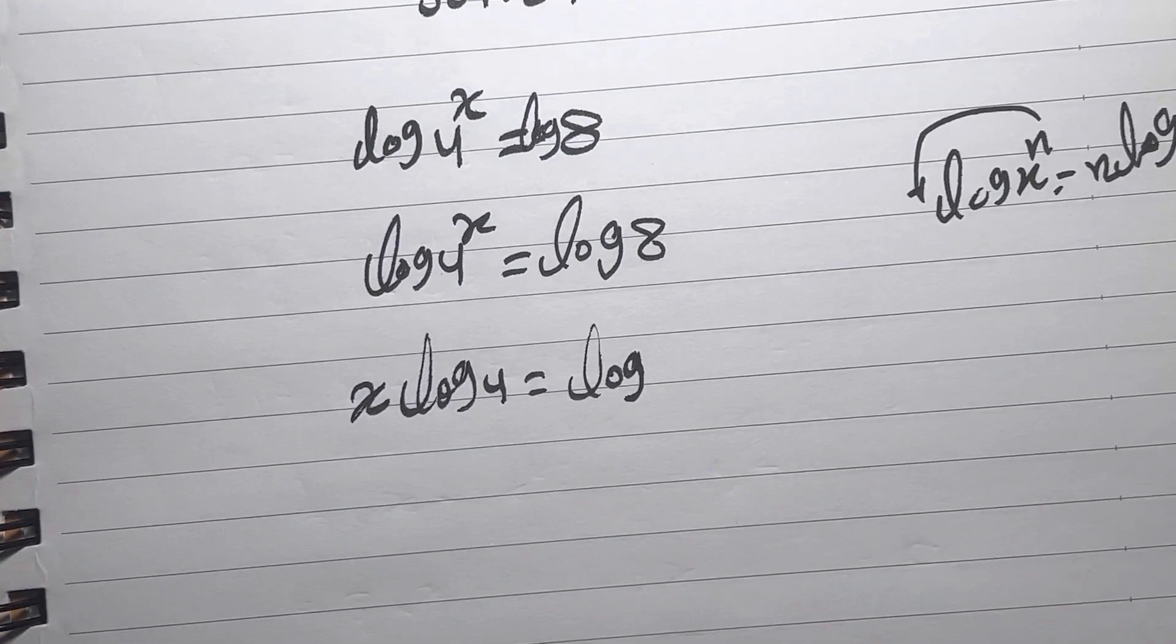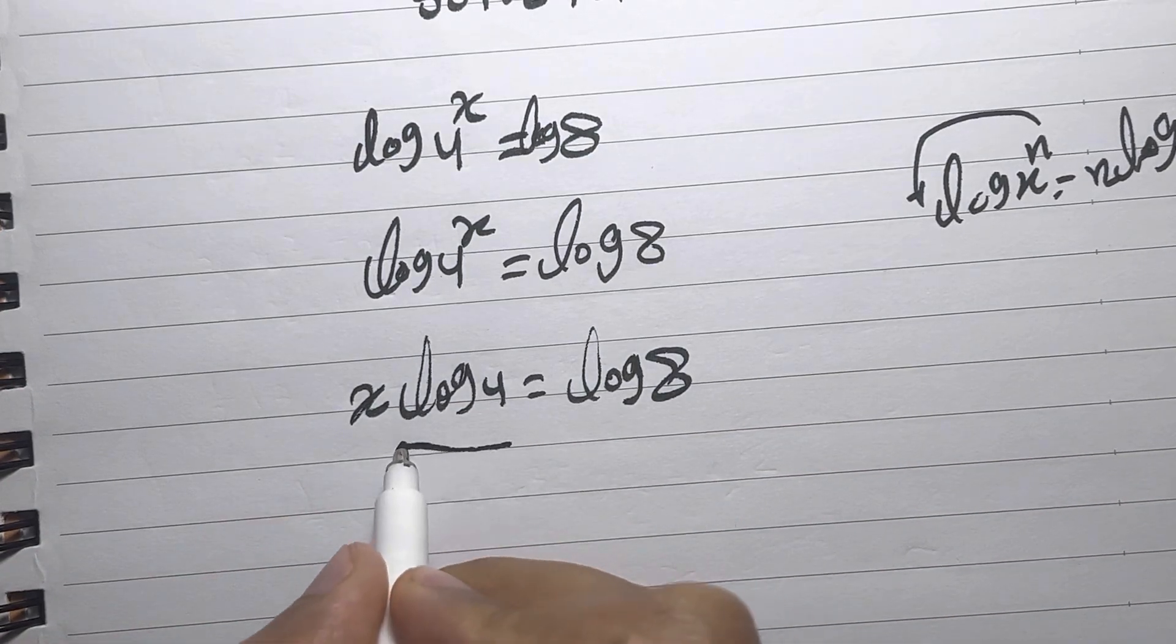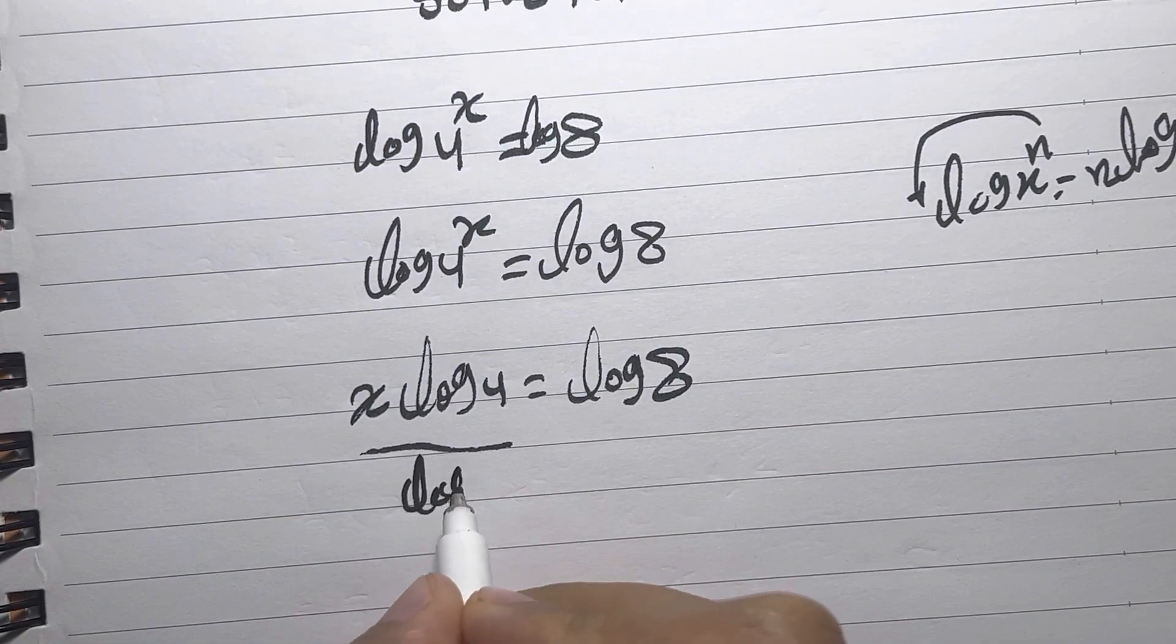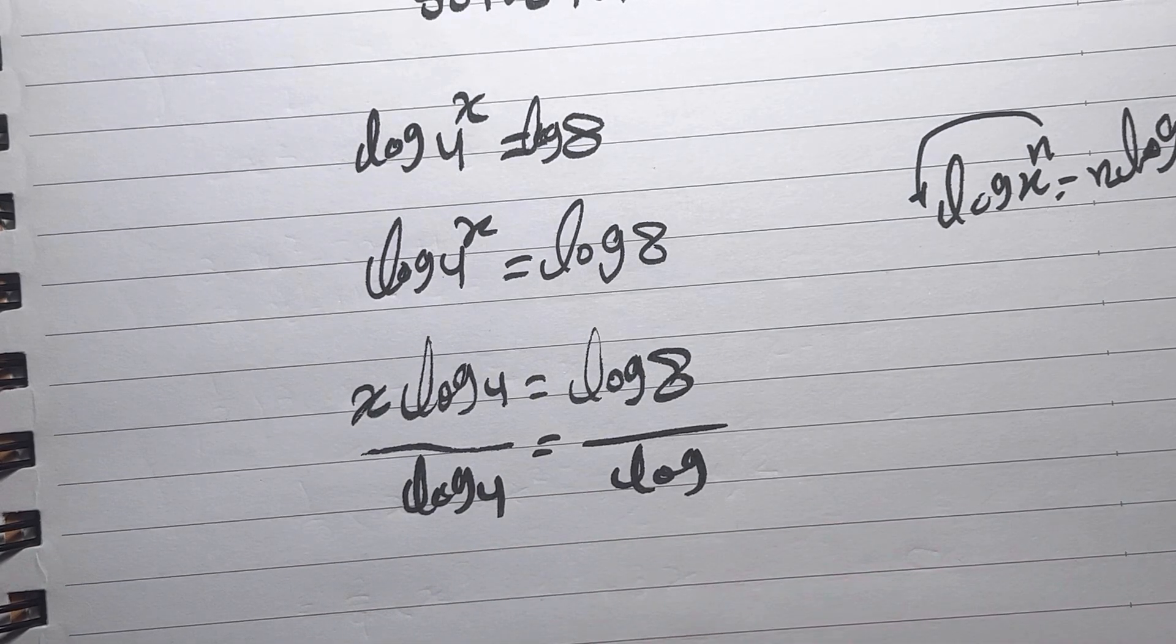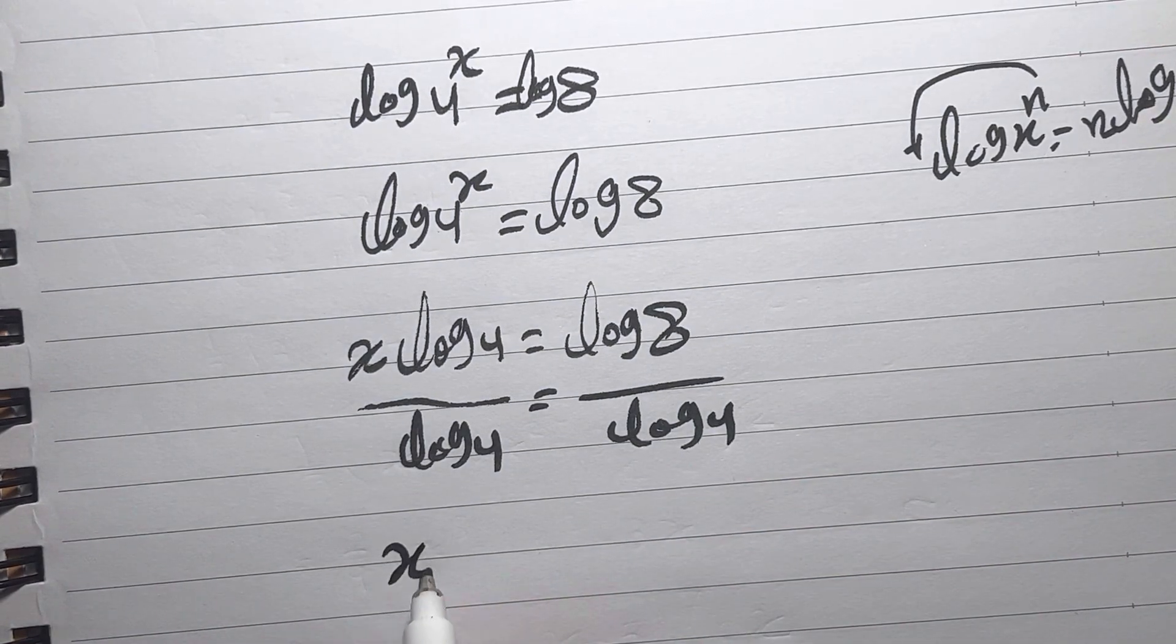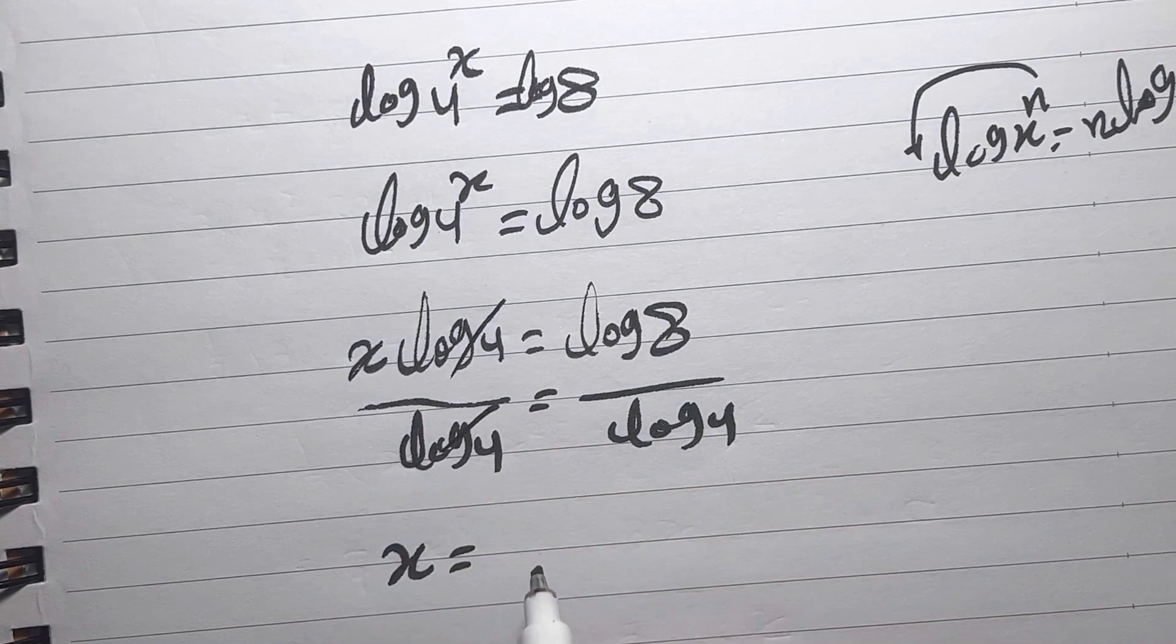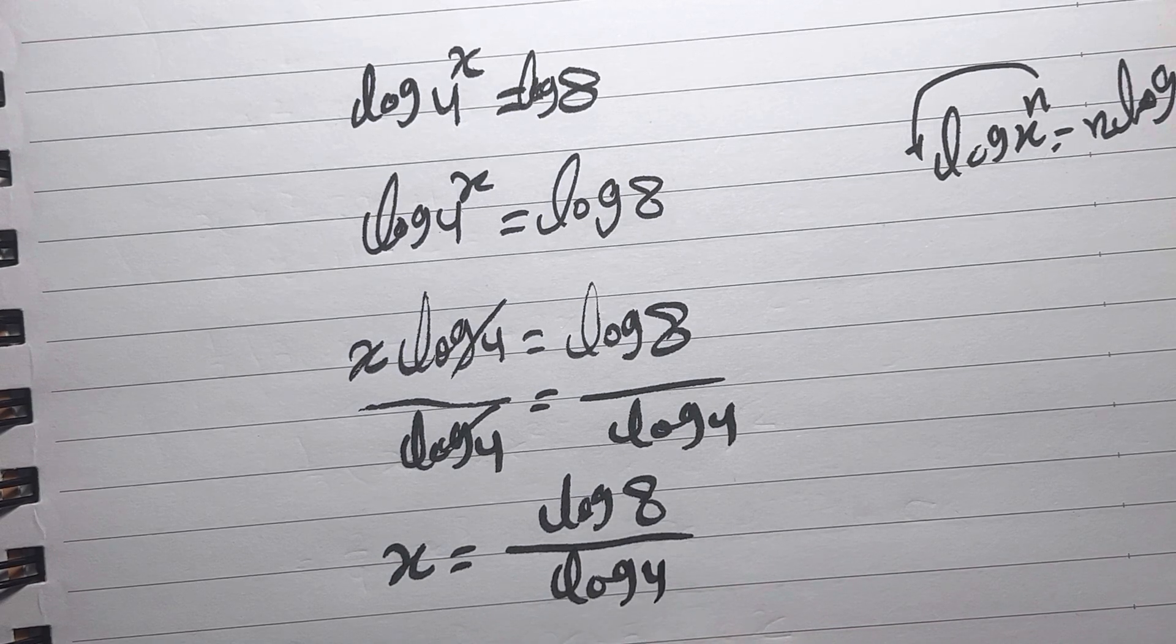We are going to divide both sides by log 4 to get x alone. So here this one will be cancelled, and x equals log 8 over log 4.